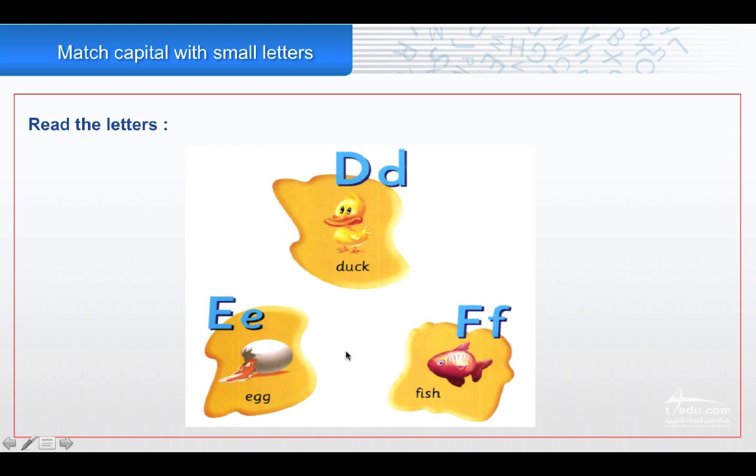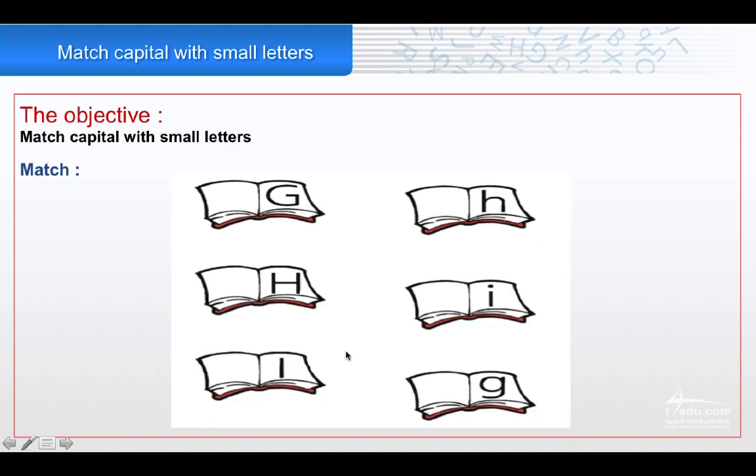F, fish. The objective, how to match capital with the small letters. We have capitals and small, and we should match capital with small letters.